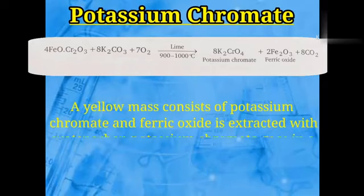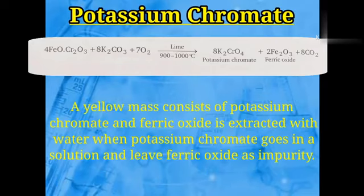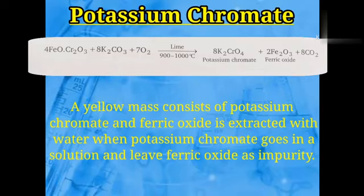The mass obtained is a yellow colored substance containing ferric oxide and potassium chromate mixed together. To separate them, the entire product is mixed in water. The potassium chromate forms a yellow colored solution, while ferric oxide remains at the bottom as an insoluble impurity, allowing us to extract potassium chromate.